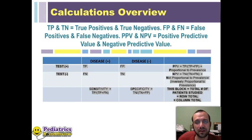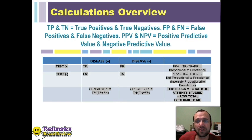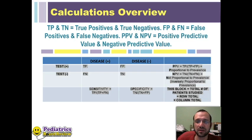Column two, next over, is disease positive — so patients who have the disease — those would be your true positives and your false negatives. Column three is disease negative — so those are your false positives and true negatives. Row four and column four give you the calculation results using each of those values, and we'll review that later.